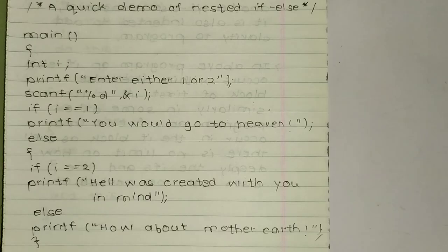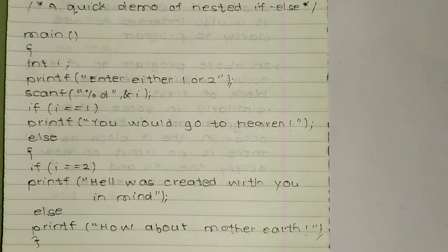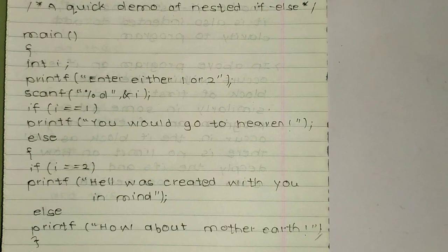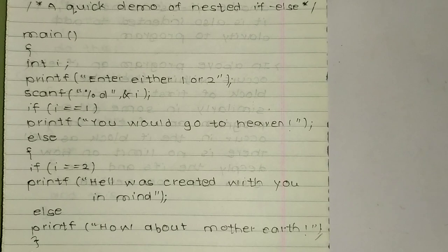scanf("%d", &i) scans the value entered by the user. Percent d is used because ampersand i is an integer. Now, if i is equal to (==) one — this double equals is a relational operator — we compare i with one.